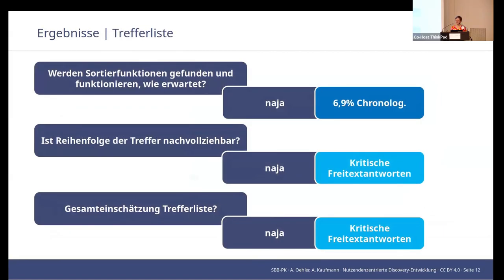The next question concerned the hit list. Are the sorting functions found and do they work as expected? The result from the participatory observation was 'yes, sort of.' Then 6.9% use chronological sorting, usually from most recent to oldest. The other sorting functions offered are at best 0.8% or less in terms of usage rate.